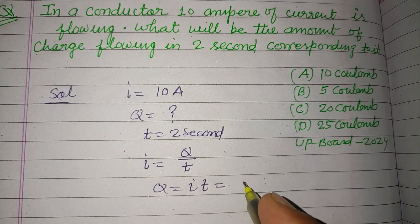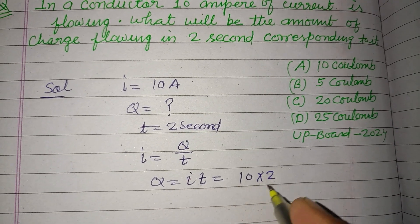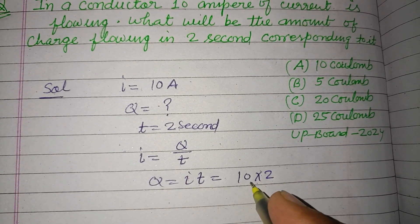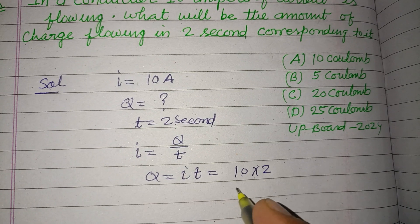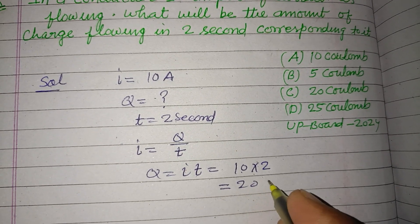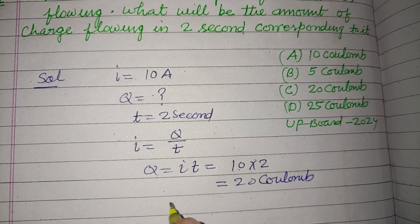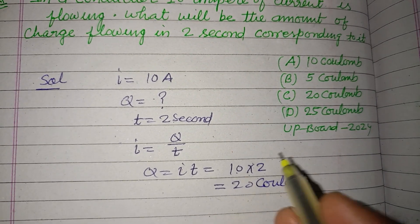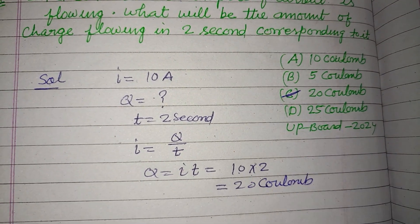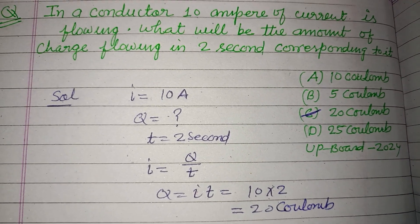So I is 10 ampere and t is 2, so Q = 10 × 2 = 20 Coulomb. So 20 Coulomb charge flows from the circuit. So C is the correct answer. I hope you got it, please like the video.